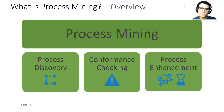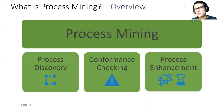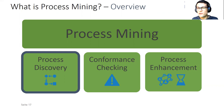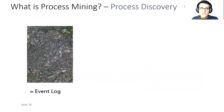What can we do with this type of data? Within process mining there are a few pillars — types of techniques and algorithms that you can use. There is process discovery, conformance checking, and process enhancement. I will show each of these by means of a small example. Let's start with process discovery.